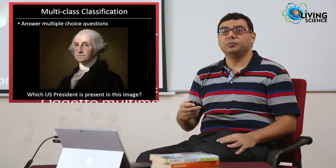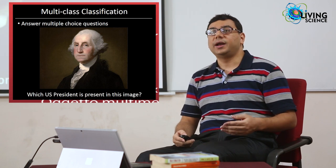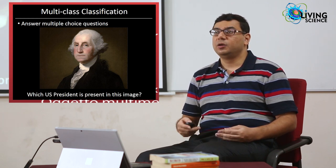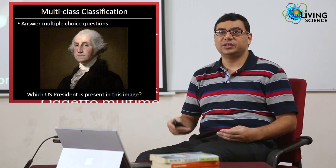After a while, the machine learning community realized that many questions in the real world are actually multiple choice and not just binary. This led to the area of multi-class classification, where we learn to answer multiple choice questions involving uncertainty — for example, which US president is present in this image, choosing from a list of 44 or 45. Real-world examples include recognizing handwritten characters, Xbox gestures, or identifying the foreground object in an image.